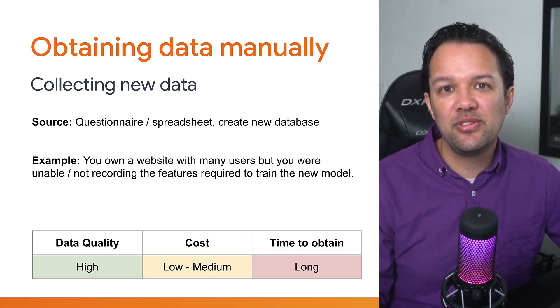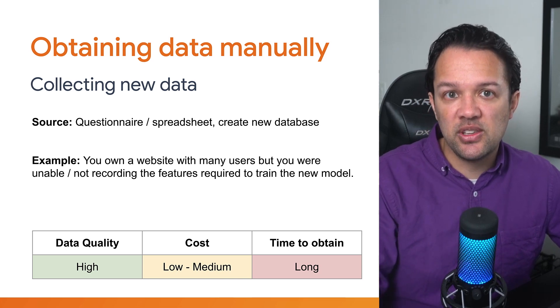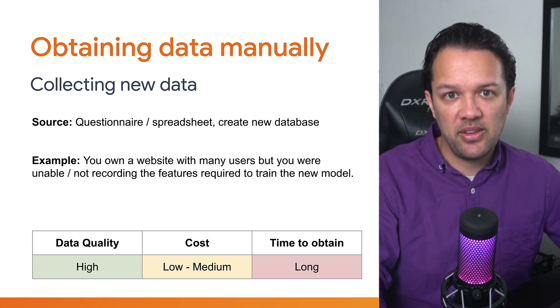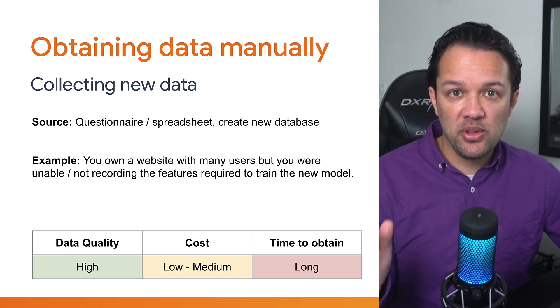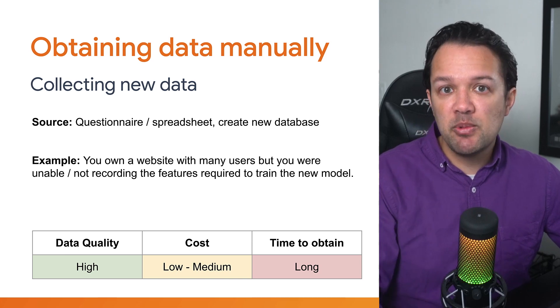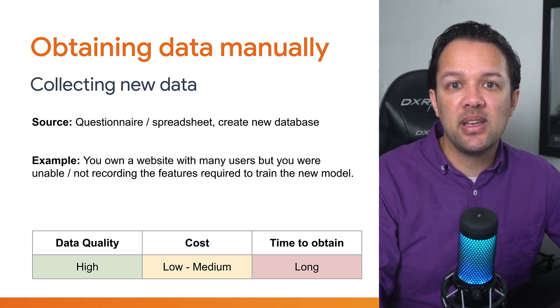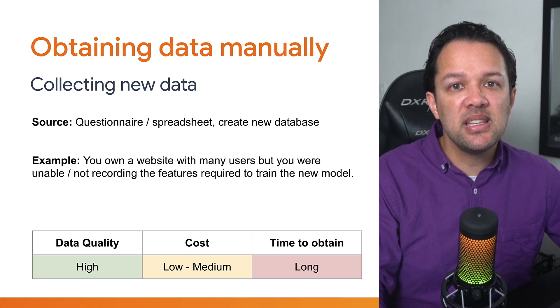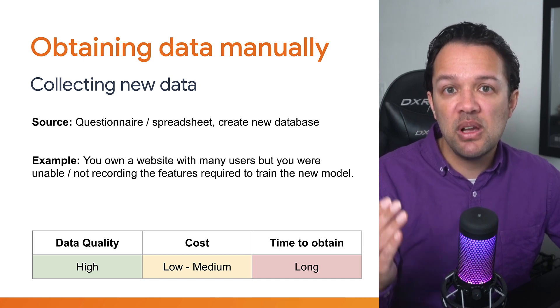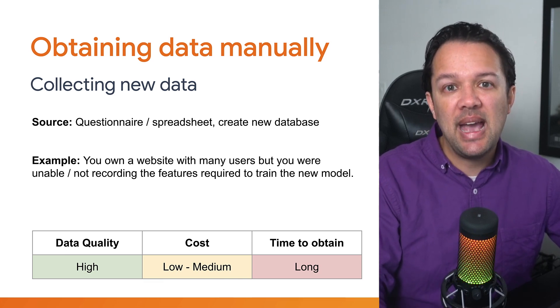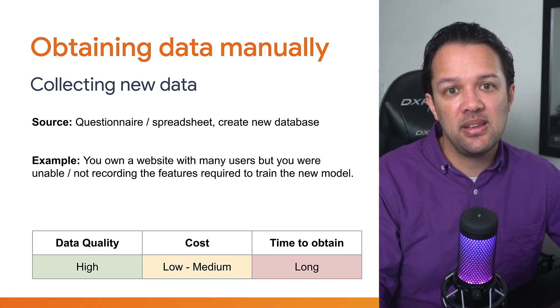A more common situation is that you have to start recording the data you need once you've defined what it is. The first way to do this would be to do it yourself — you could update your system to start recording such features, or use new sources like a questionnaire sent to your users, recording the results in a spreadsheet or database. Do remember to record such data in a machine learning friendly way, as everything must be represented numerically to be sent to the model, and you may have to pre-process the data before it's usable. The data quality is potentially high as you still have control over how it's collected, however the cost would increase as you'll need engineering time, and it might take a long time to gather enough examples.